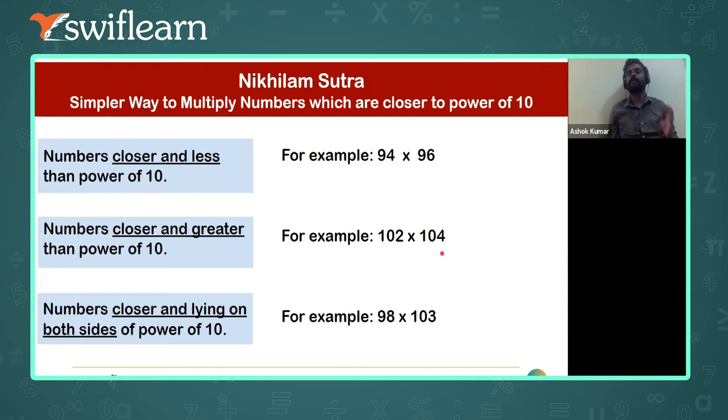In the second case, if you can closely observe, it is 102 into 104. In the second case you see it is greater than 100. That means the basis greater than the basis and lesser than the basis - first one is lesser, the second one is greater.